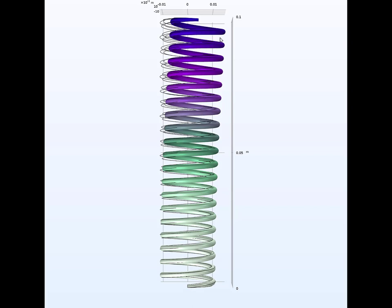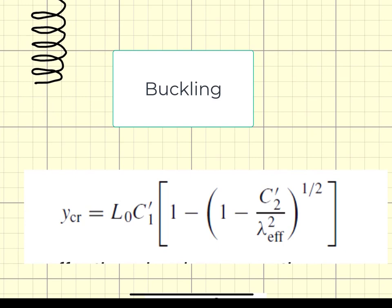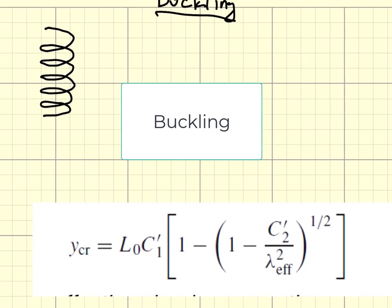This is one of the failure modes we have to consider. When designing with coil springs, it's really important to keep in mind that under the influence of a compression load, these coil springs could, instead of elastically deforming, buckle. We need to come up with a buckling criterion for these elastic springs.